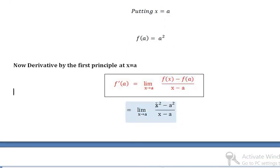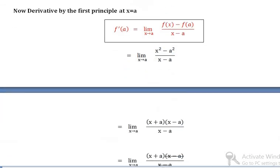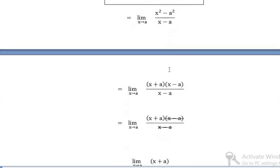So here f of x is x squared, minus f of a which is a squared, all divided by x minus a. We cannot directly apply the limit here because if we apply the limit directly, the denominator becomes zero, so we have to use a different method.